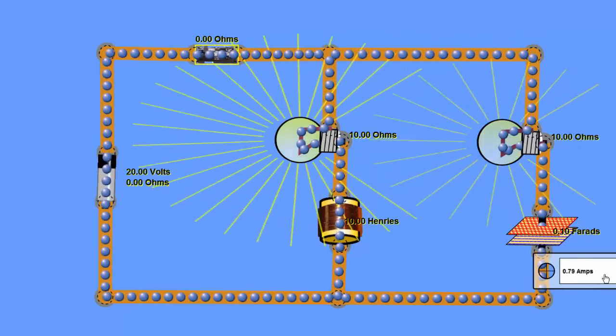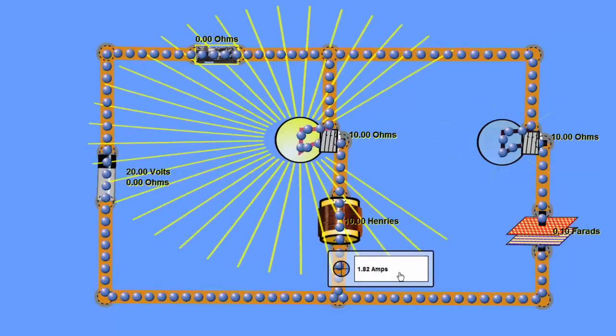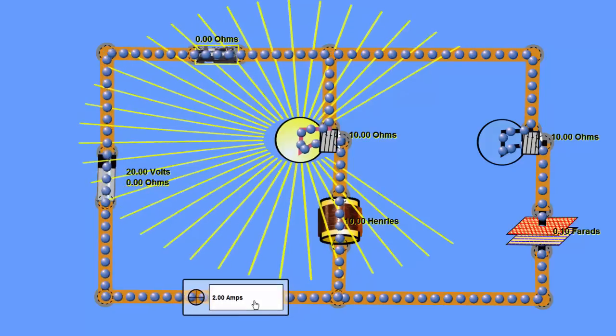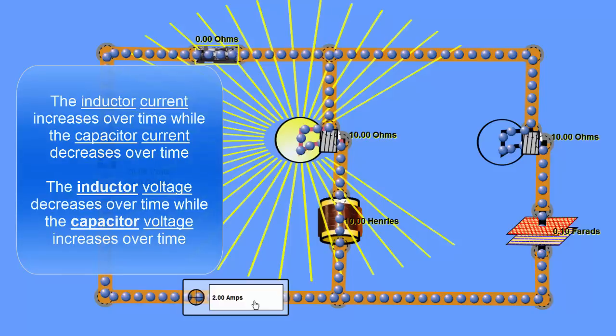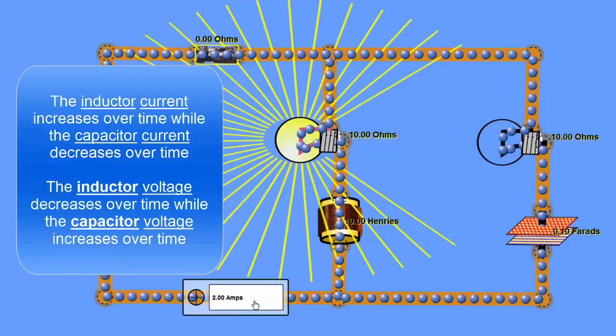Okay, notice our capacitor current is dropping, our inductor current is increasing, and we have a constant two amps here. At this point the capacitor is completely charged. Our inductor circuit current will remain the same forever, or at least until we open the switch again.